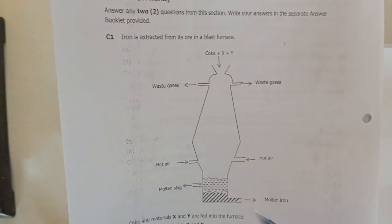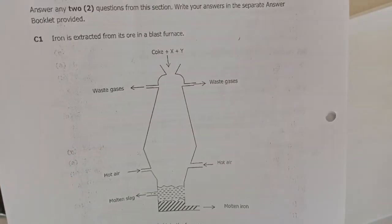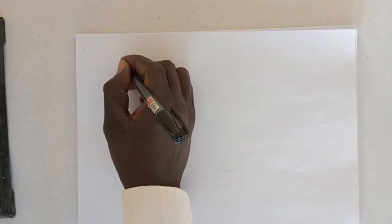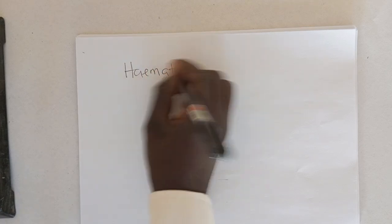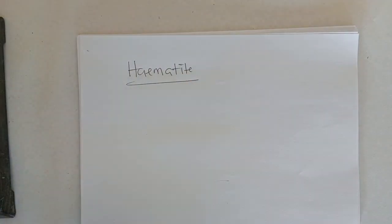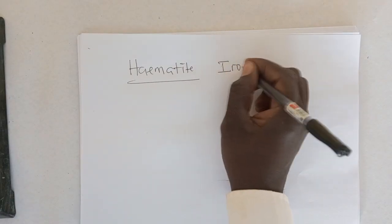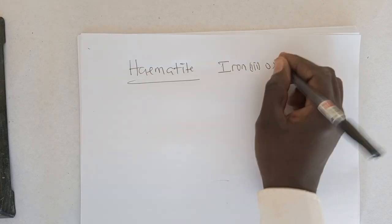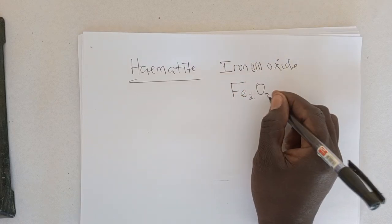So before we go to the questions, let's understand what is going on here. During the extraction of iron, iron is basically extracted from its major ore which is called hematite. Hematite is the ore from which iron is extracted. The chemical name of hematite is iron(III) oxide, and the chemical formula is Fe₂O₃.